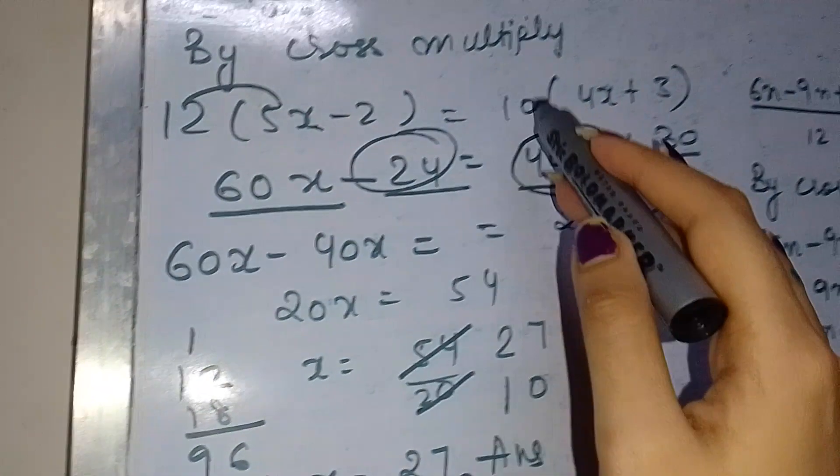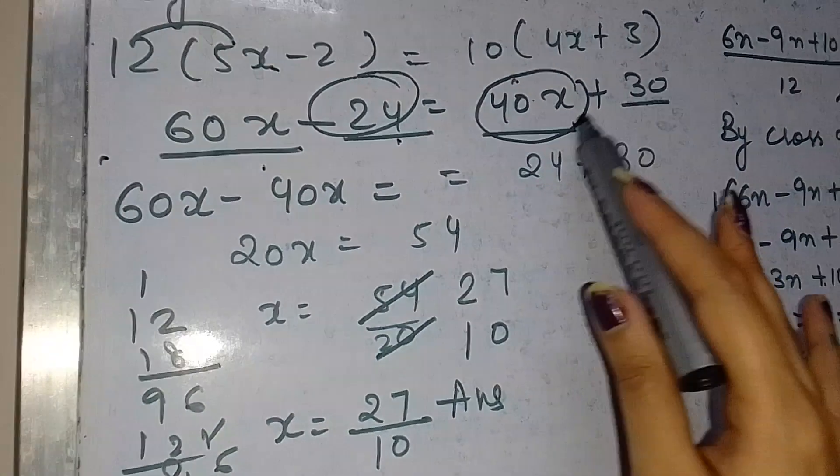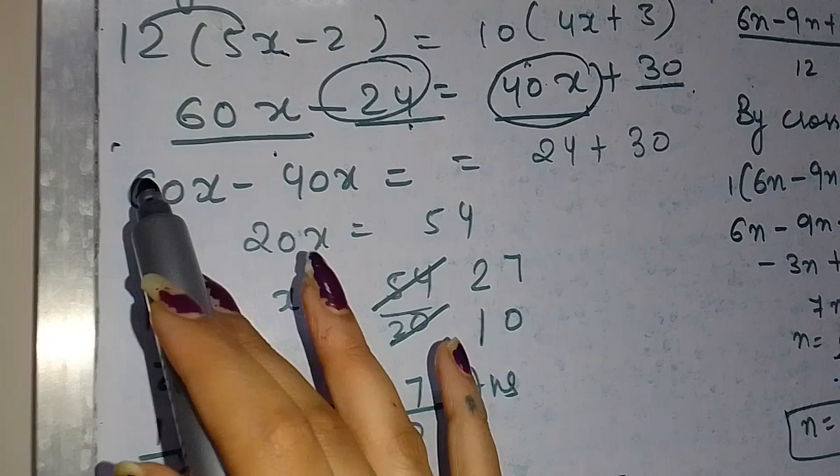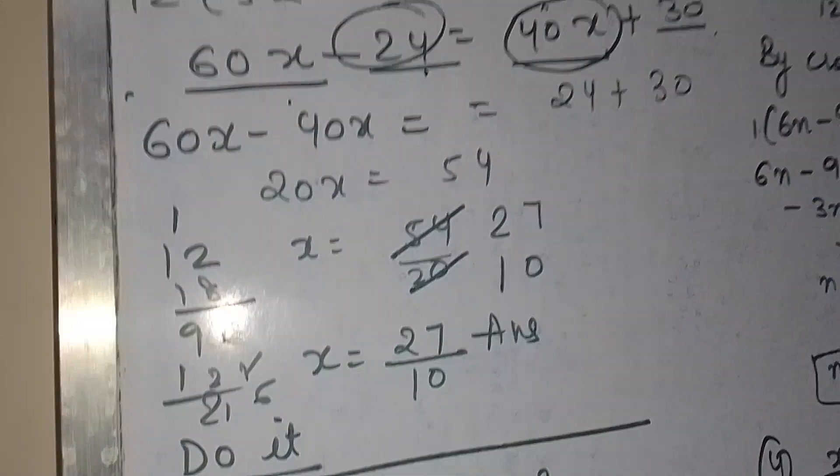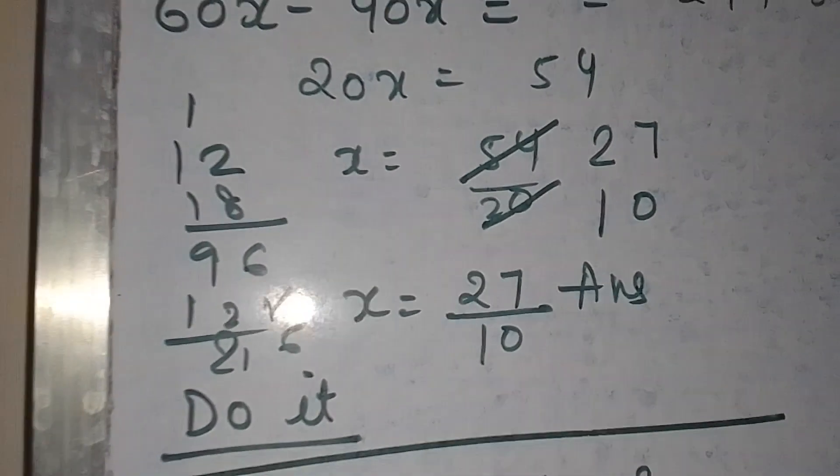12 into 5x minus 2 equals 10 into 4x plus 3. Expanding: 60x minus 24 equals 40x plus 30. Simplifying: 60x minus 40x equals 30 plus 24, so 20x equals 54.